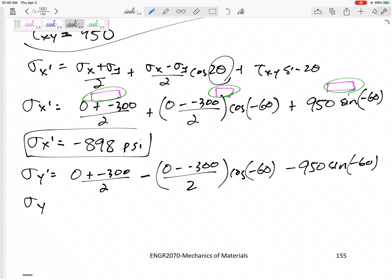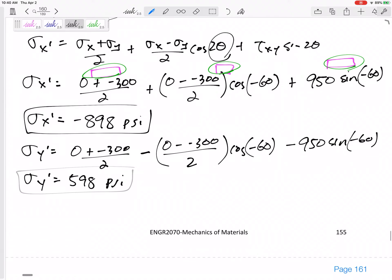All right. And then I would just get my values, my new sigma y prime, 598 psi. Last one. The equation for my new tau prime x, or tau x prime y prime, my new shear stress is negative sigma x minus sigma y divided by 2 sine of 2 theta plus tau xy cosine of 2 theta.